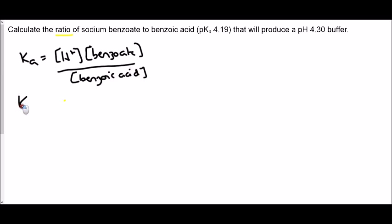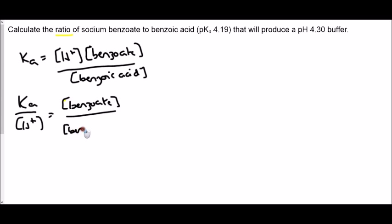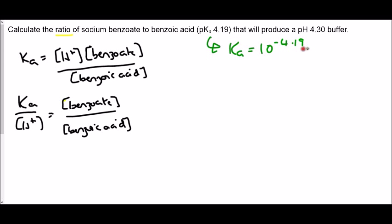And rearranging it into the ratio form, which looks like this. Once we've got to that stage, we should be able to put our numbers in, except that the first thing we need to be doing is converting pKa into Ka. So we're going to do 10 to the minus 4.19.